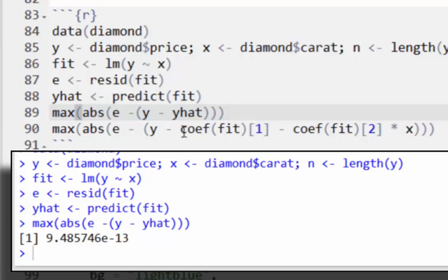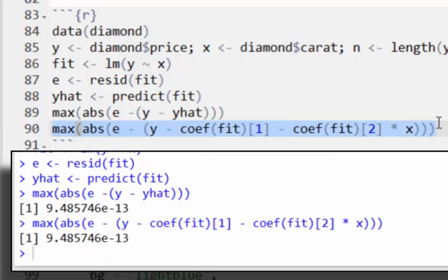Then lastly, I just want to show that if I manually even calculate the fitted values, coef fit 1, and then coef fit 2 times x, that I, of course, will get exactly the same number, so up to numeric precision, exactly the same.